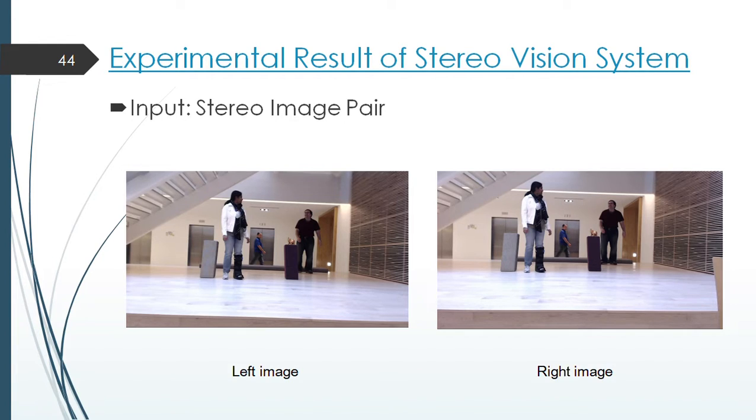Experimental result of stereo vision system. Our stereo vision system needs two inputs of left image and right image. This is the scene observed by two cameras side by side.